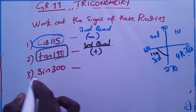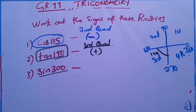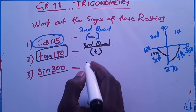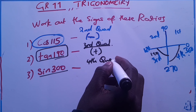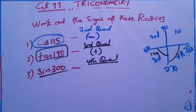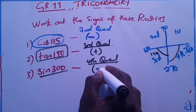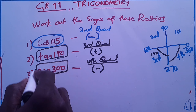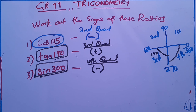Now sine of 300°: 300° is between 270° and 360°, so it is in the fourth quadrant. In the fourth quadrant, sine is negative — so sine(300°) gives a negative answer. I'll leave you with Checkpoint 8 from the trig series to practice, and I'll end this lesson here.